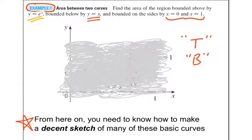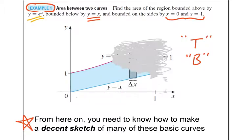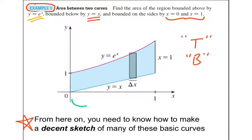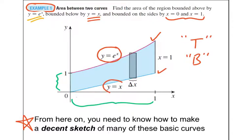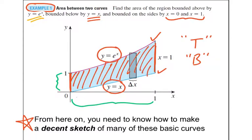E to the x is exponential so it curves up, and y equals x is diagonal, so it should look a little like this. You can see that the top curve is y equals e to the x and the bottom curve is y equals x. We're bounded between 0 and 1, so we're only going to take that area — this blue shaded region. But again, you really need to know how to graph these by hand.